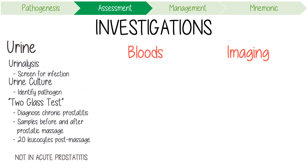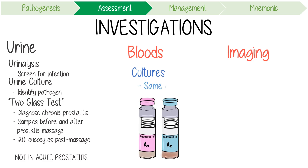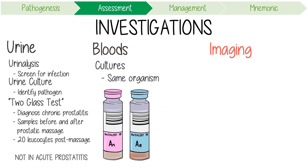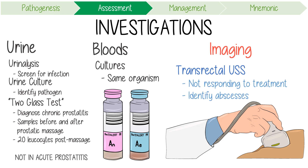Blood tests should include blood cultures if the patient is febrile, as they can often show the same organism as the urine culture. Imaging, including transrectal ultrasounds, is only really used if patients aren't responding to treatment and can identify prostatic abscesses that might require drainage.